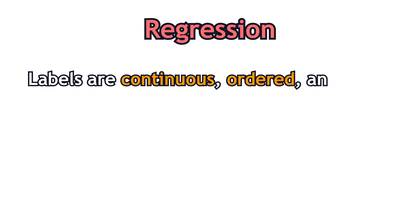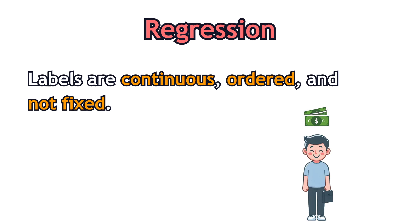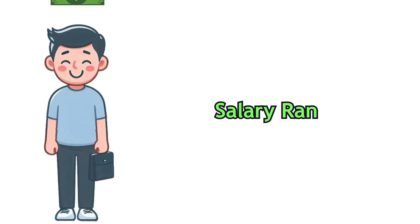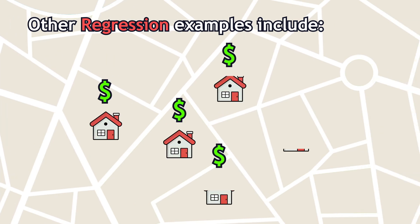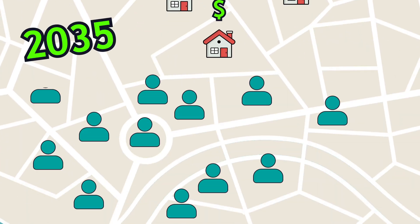In the case of regression, the labels are continuous, ordered and not fixed. For example, predict the salary of a person based on his role, experience and education. Salary can range from zero to infinity and can even have this form. Other examples include estimating house prices or predicting the future population of a certain area.